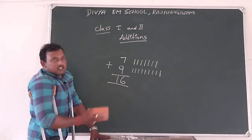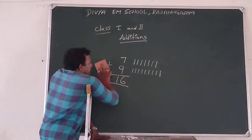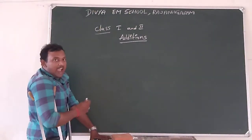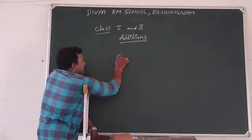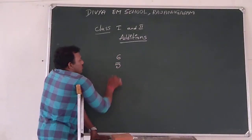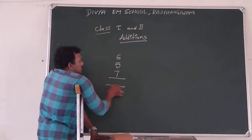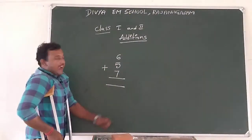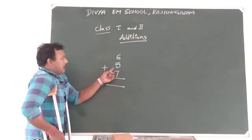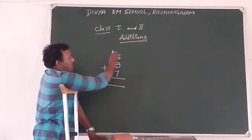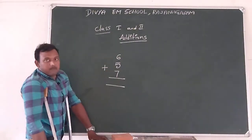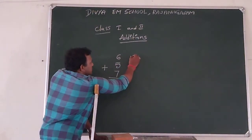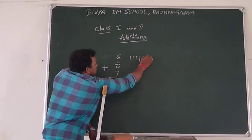Now let us see 3 numbers. We are going to add 6, 5, and 7. Don't forget to add all 3 numbers here. Now we are going to add number 6 to number 5 and number 7. For 6, we are going to take 6 sheets: 1, 2, 3, 4, 5, 6.